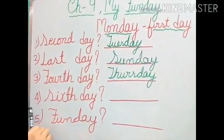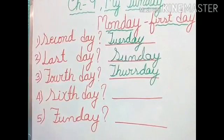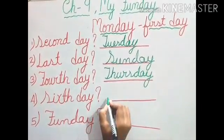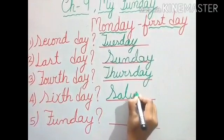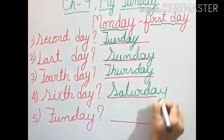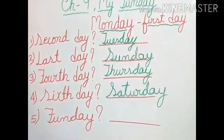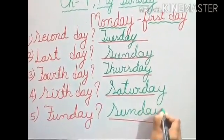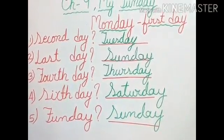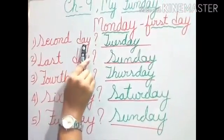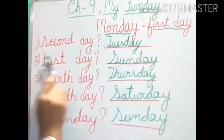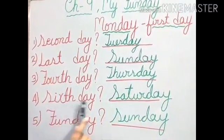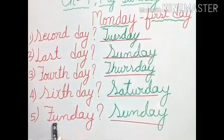Now next, number four: what is the sixth day of the week? Think and tell. Yes, very good — it is Saturday. And the last one: what is the fun day of the week? Yes, it is Sunday, because Sunday is a fun day. So to review: second day is Tuesday, last day is Sunday, fourth day is Thursday, sixth day is Saturday, and fun day is Sunday.